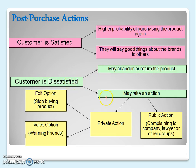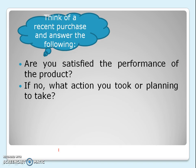When dissatisfied, you have two options: you may abandon or return the product if possible. If not, you may take private or public action. Public action means filing a case in court. Private action means silently exiting — stopping buying that product — and warning others not to buy that brand either. Finally, based on your satisfaction or dissatisfaction, you will use and dispose of the product accordingly.